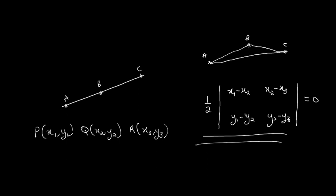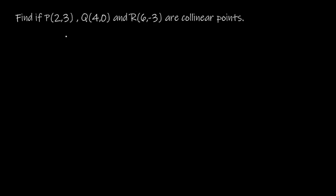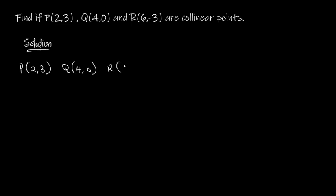So let's look at how to use this formula in real time. We have to find if the points P(2, 3), Q(4, 0), and R(6, -3) are collinear points. Let's write down our solution. We are using the area of a triangle formula, so I write P(2, 3), Q(4, 0), and R(6, -3).